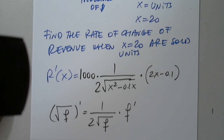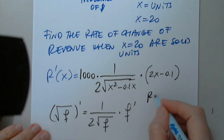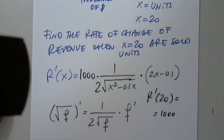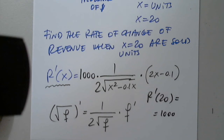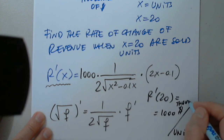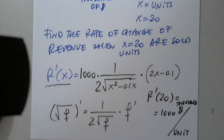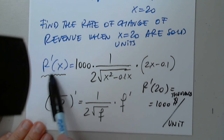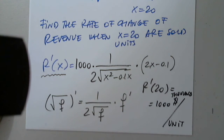We get one thousand point zero zero — so just one thousand. So r prime of 20 is one thousand. What is the measurement unit? This is super important — what is the measurement unit for any rate of change? Thousands of dollars per unit — brilliant. It's the measurement unit of r over the measurement unit of x. Always two measurement units for the rate of change. Great job.